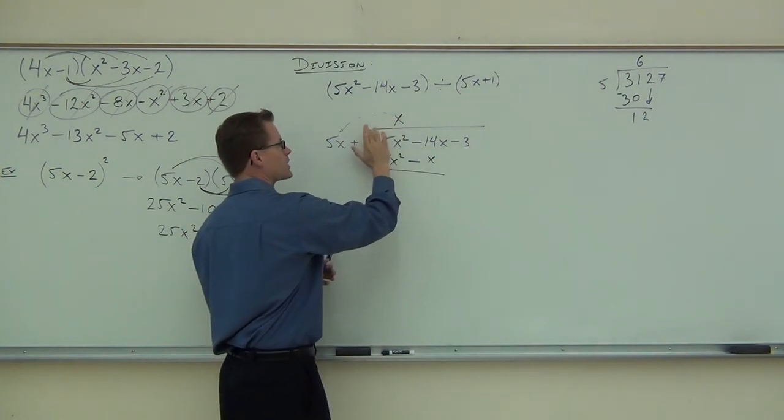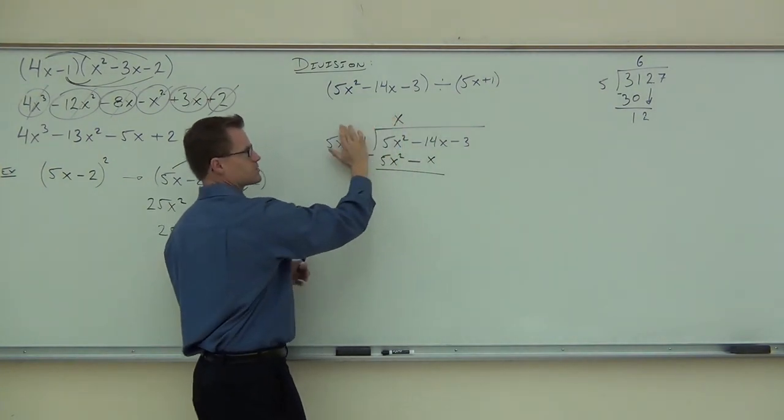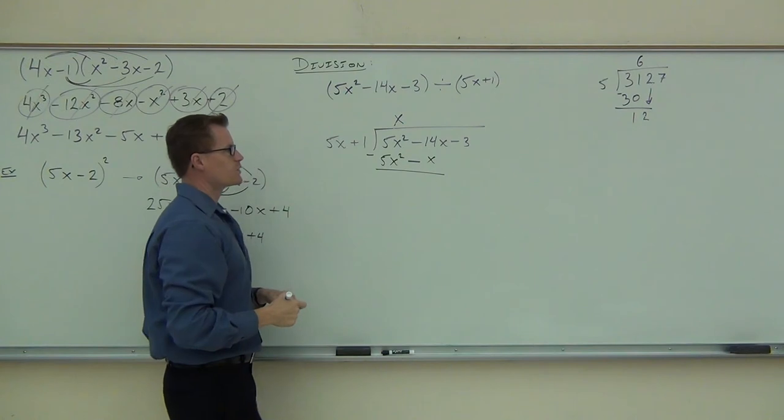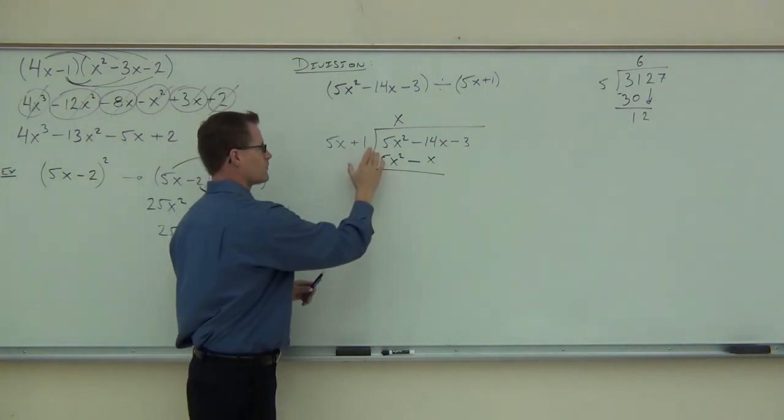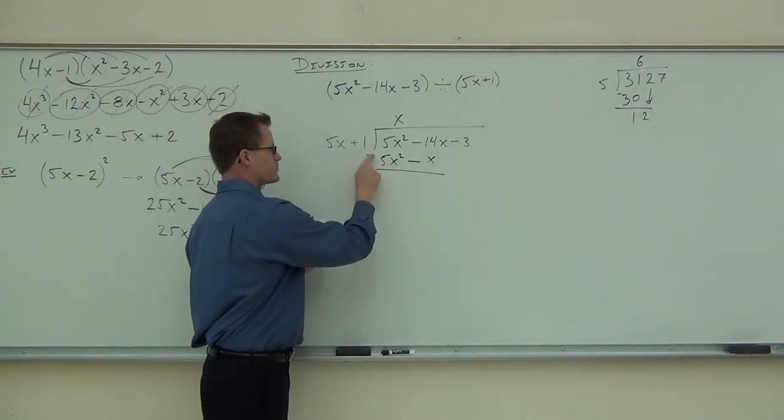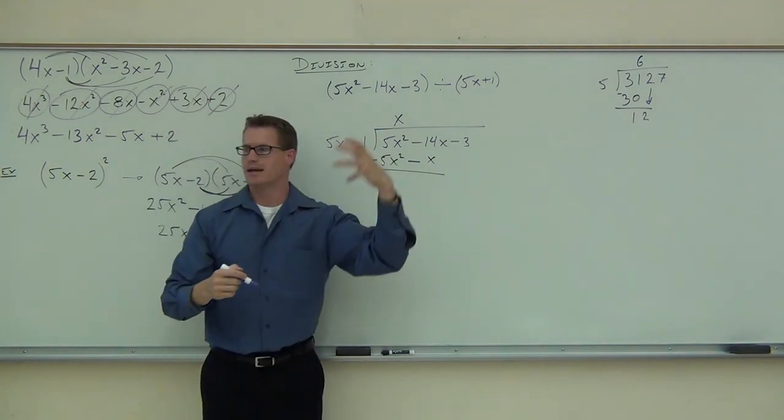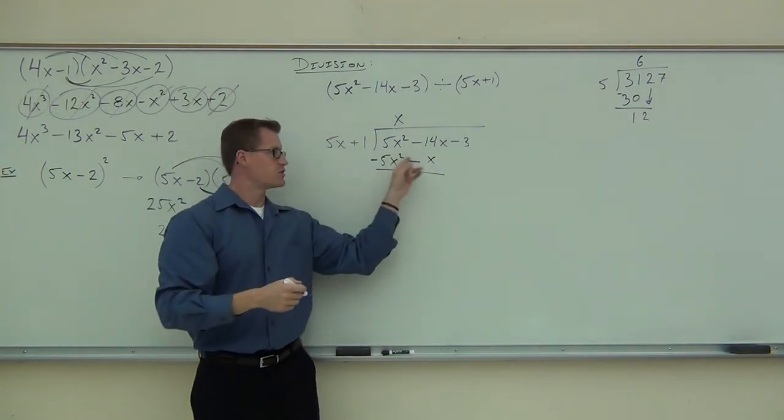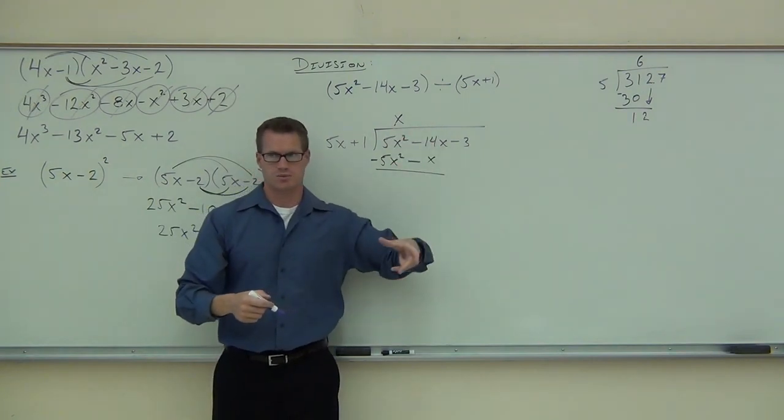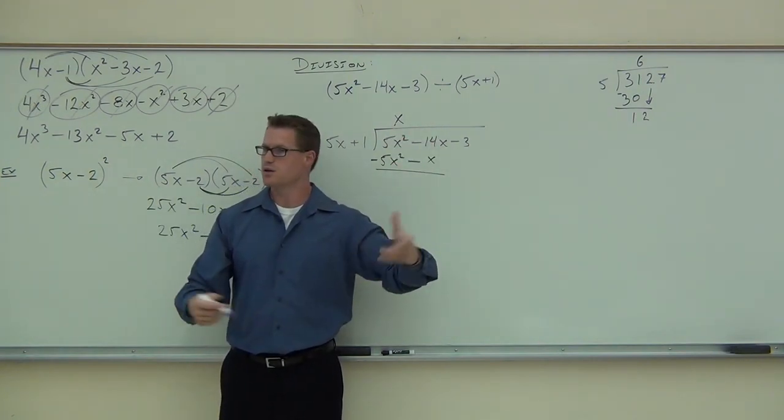Now we're ready to subtract like we do in our regular division problem on the right-hand side. So when we subtract, notice that we've changed this one. We can just consider that to be a negative right there. We're just combining like terms now. Now, because you've changed that sign, you're just combining like terms vertically. Are you with me on this? So combine like terms.